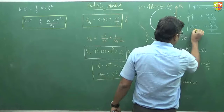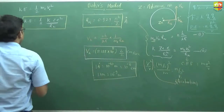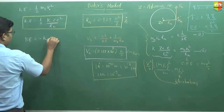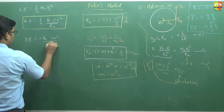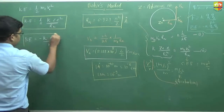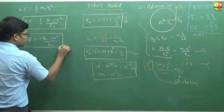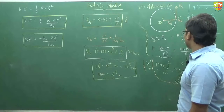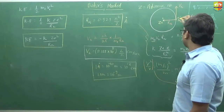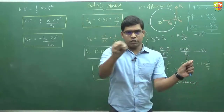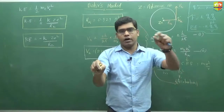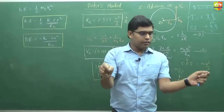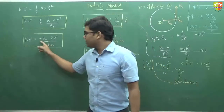Potential energy — we already know the formula k·q₁·q₂/r. So in radius r_n, the potential energy we can write as minus k·z·e² divided by r_n. Potential energy is negative because we assume at infinite distance the energy of an electron is zero. If you are taking the electron from infinity to any orbit, some work is done on it, and this work is stored into the electron — that is why we take it as negative.